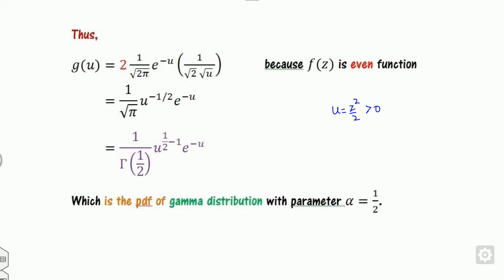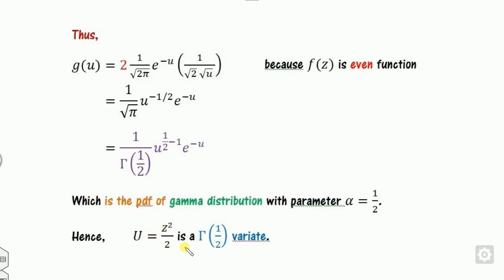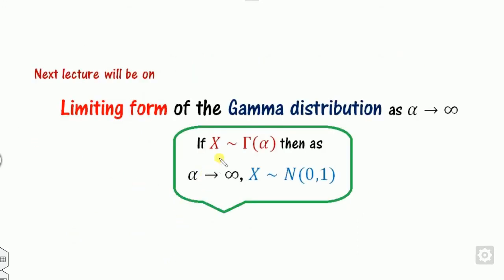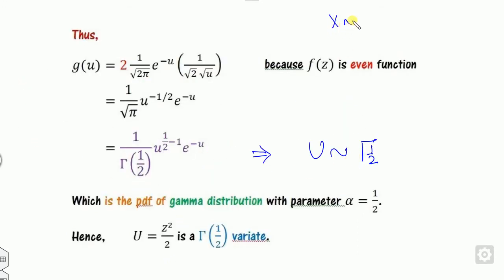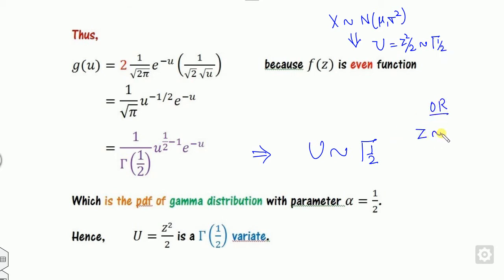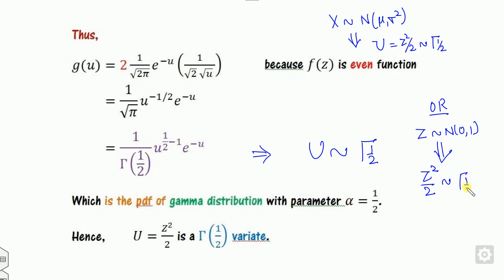Therefore, by the uniqueness theorem, U = Z squared over 2 follows the gamma distribution with parameter one-half. Hence, we conclude: if X follows the normal distribution, then U = Z squared over 2 follows the gamma distribution with parameter one-half. Equivalently, if Z follows Normal(0, 1), then Z squared over 2 follows Gamma(1/2).